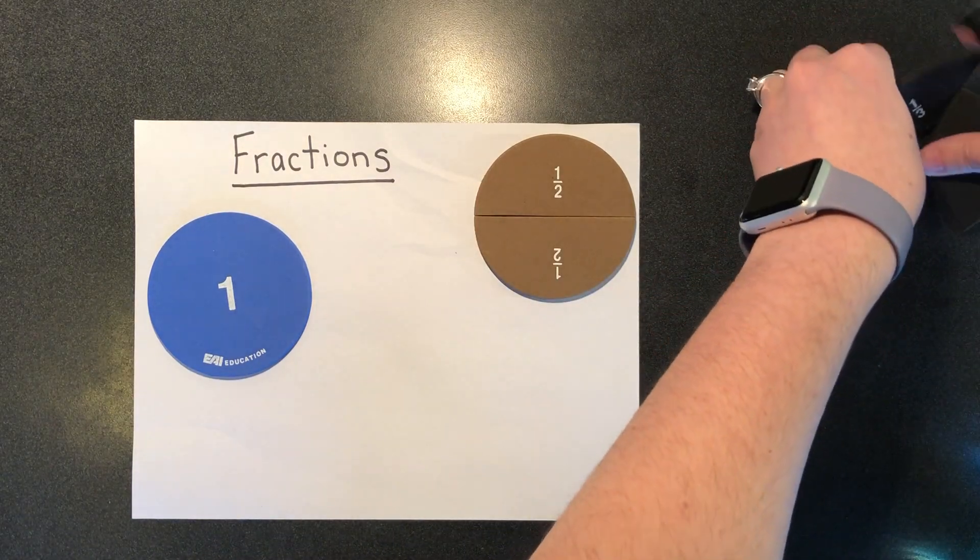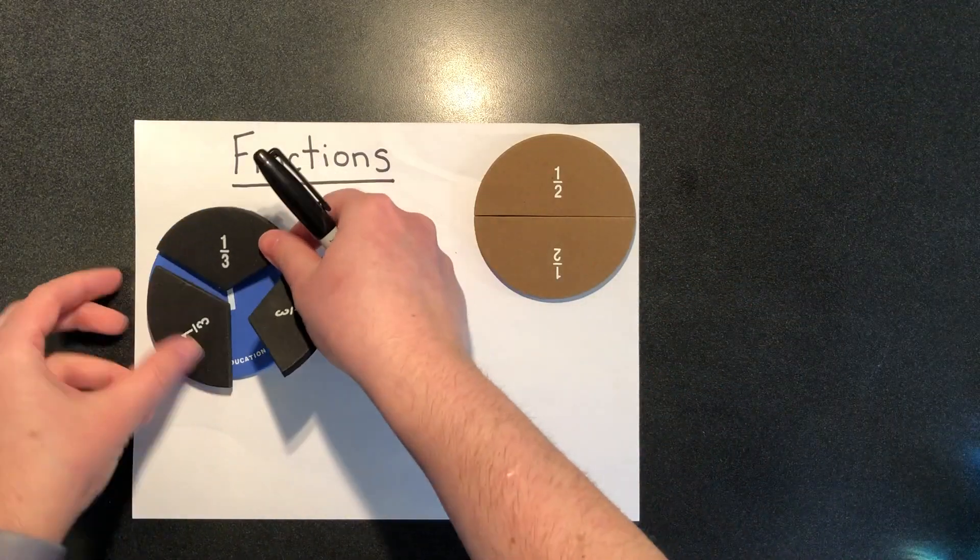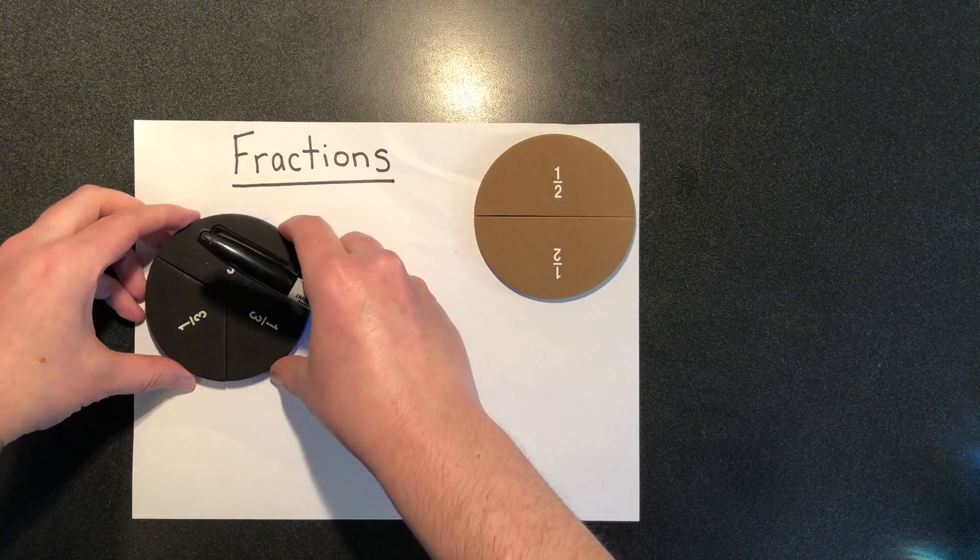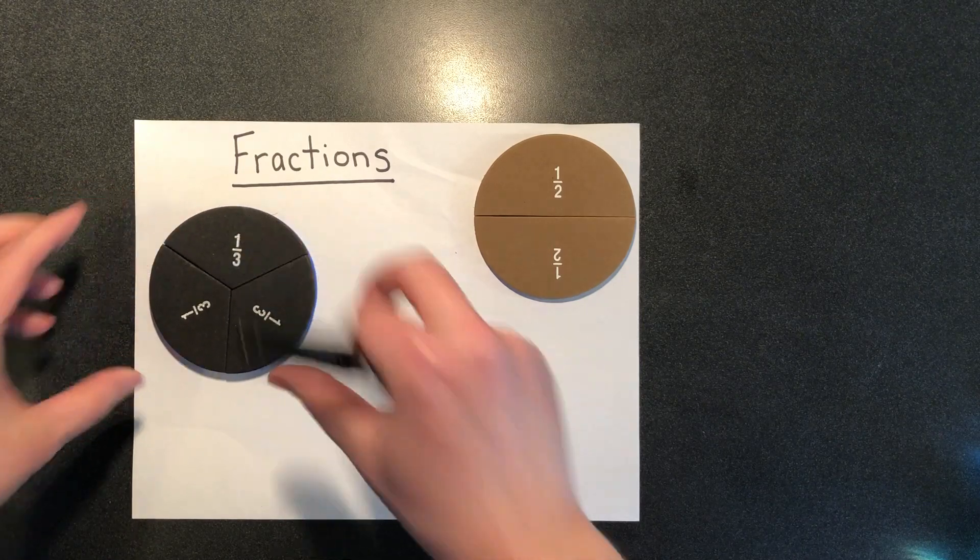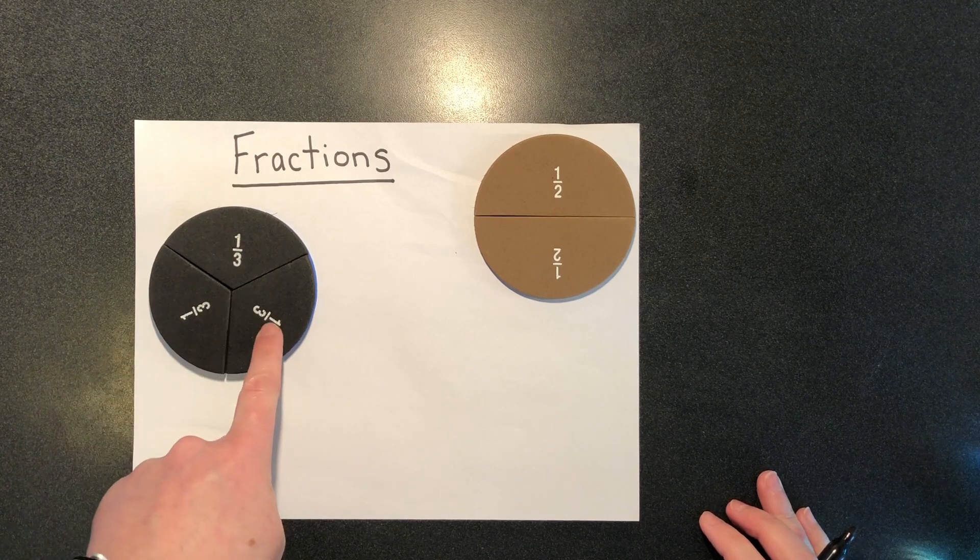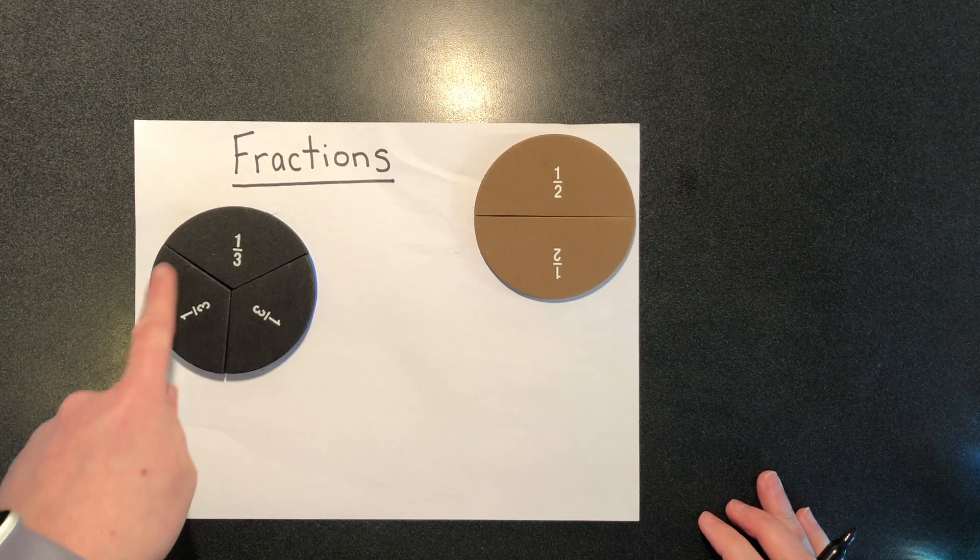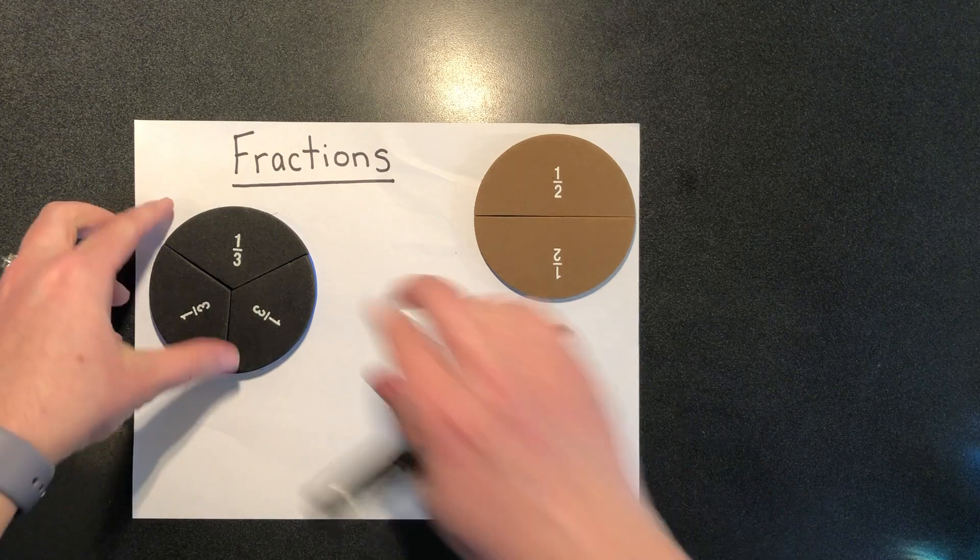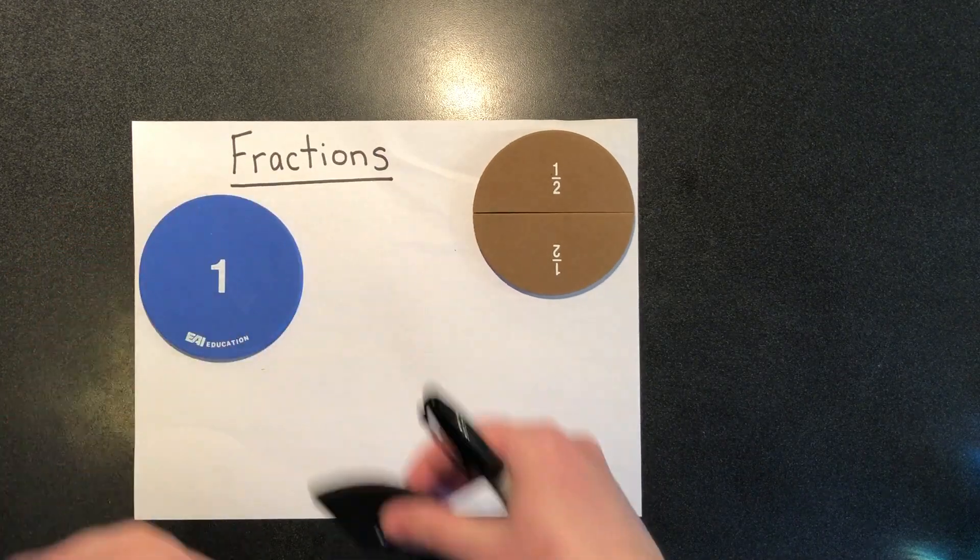If I were to break that circle into three equal sized pieces, I would call them thirds. One third, two thirds, three thirds. Three thirds is the same as one whole.